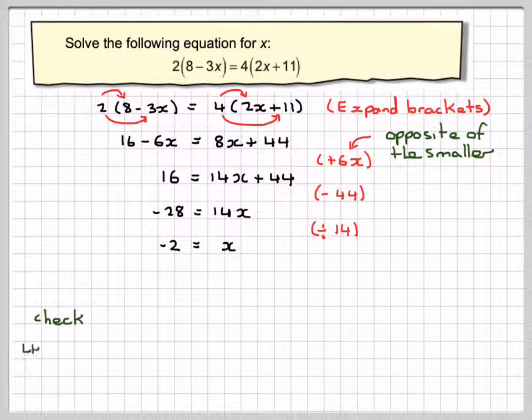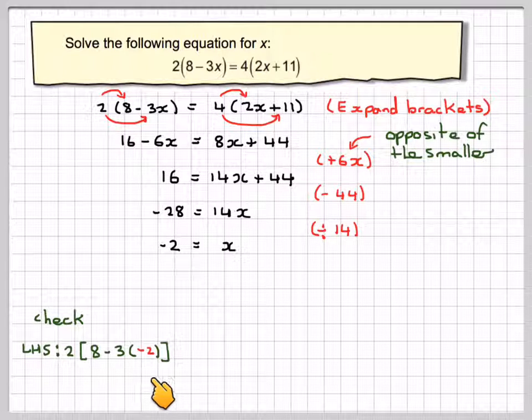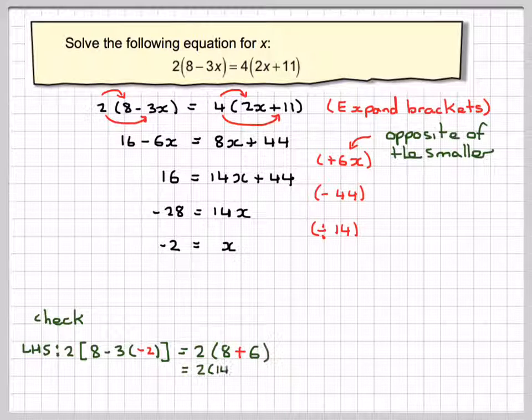Now I need to do a check. For the left-hand side, I need to go back to the original thing, 2 brackets 8 minus 3x. So we're going to have 2 brackets 8 minus 3 times minus 2. Minus 3 times minus 2 is plus 6, so this becomes 2 brackets 8 plus 6. 8 plus 6 is 14, so it becomes 2 times 14, and 2 times 14 is 28.